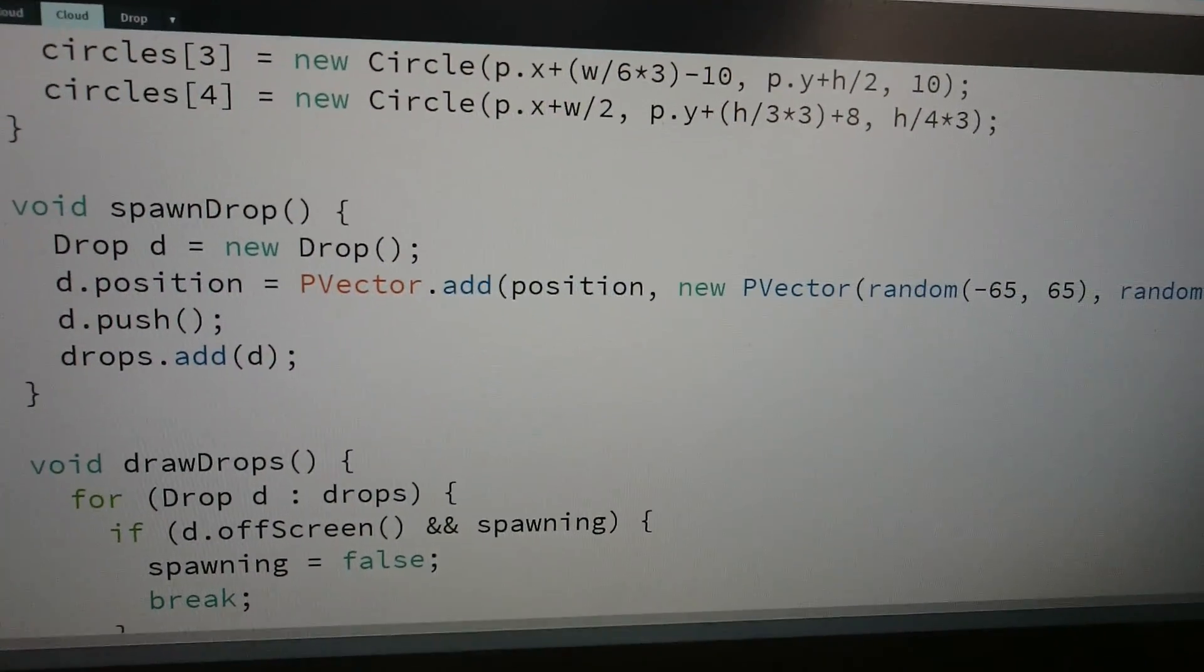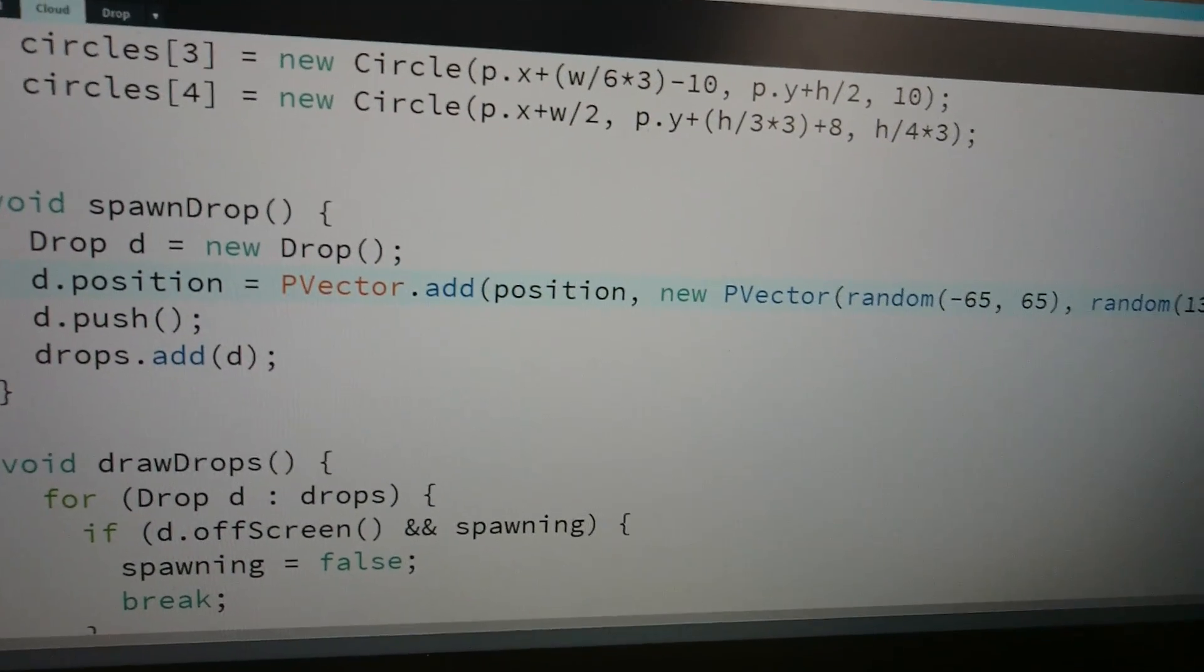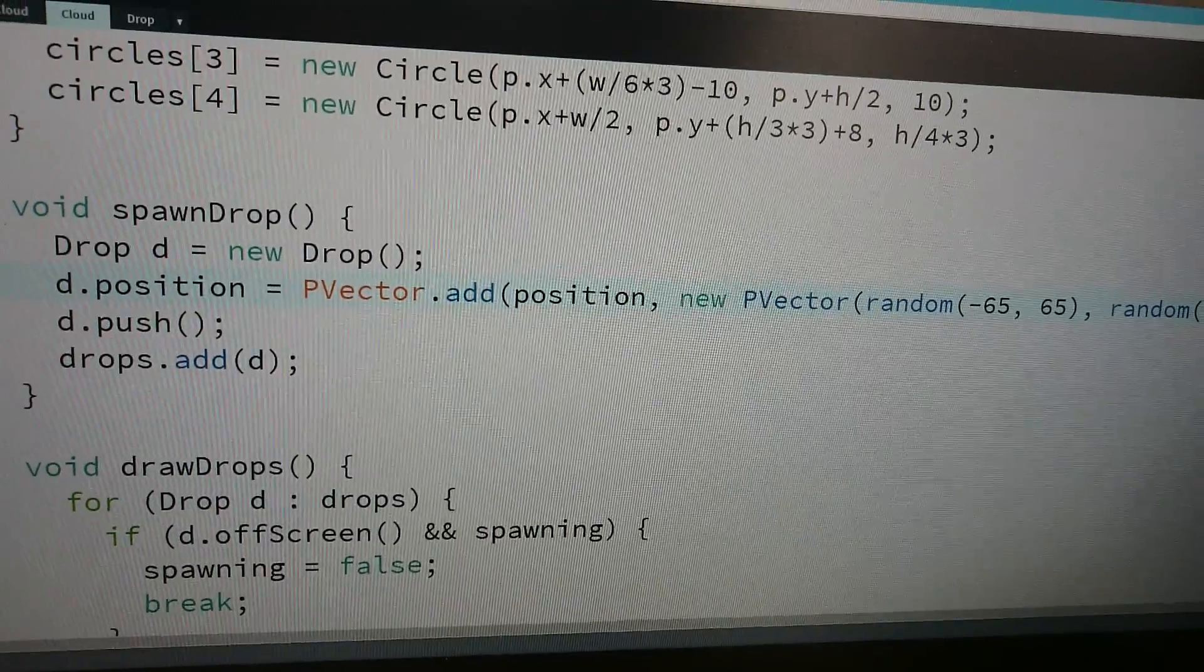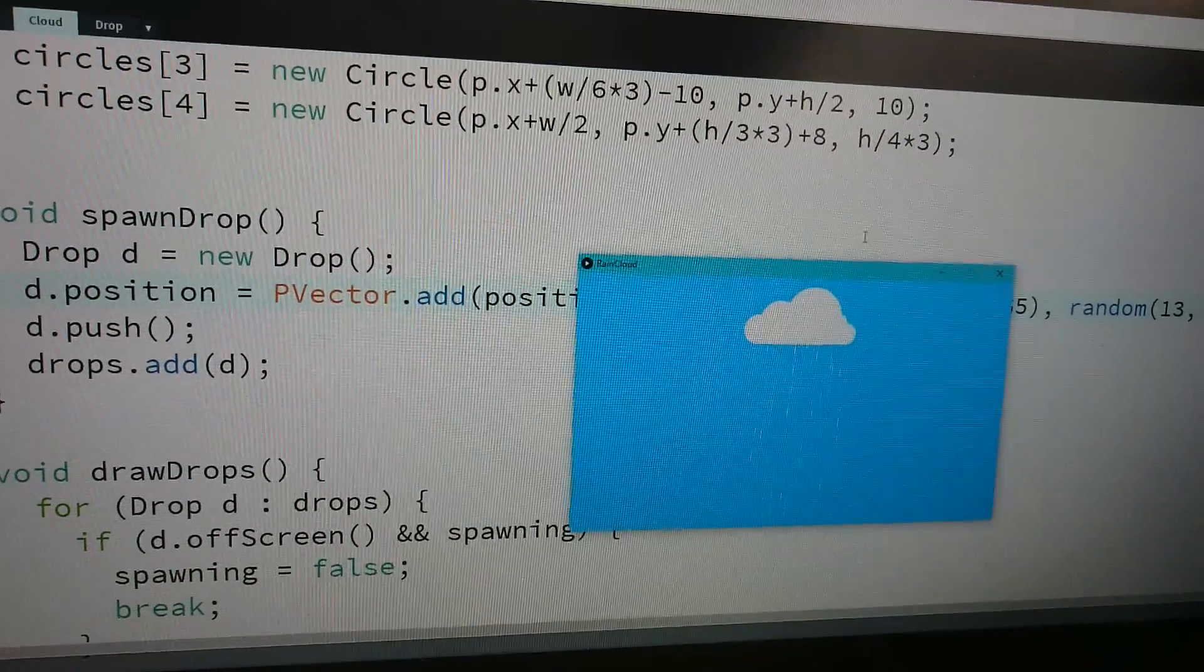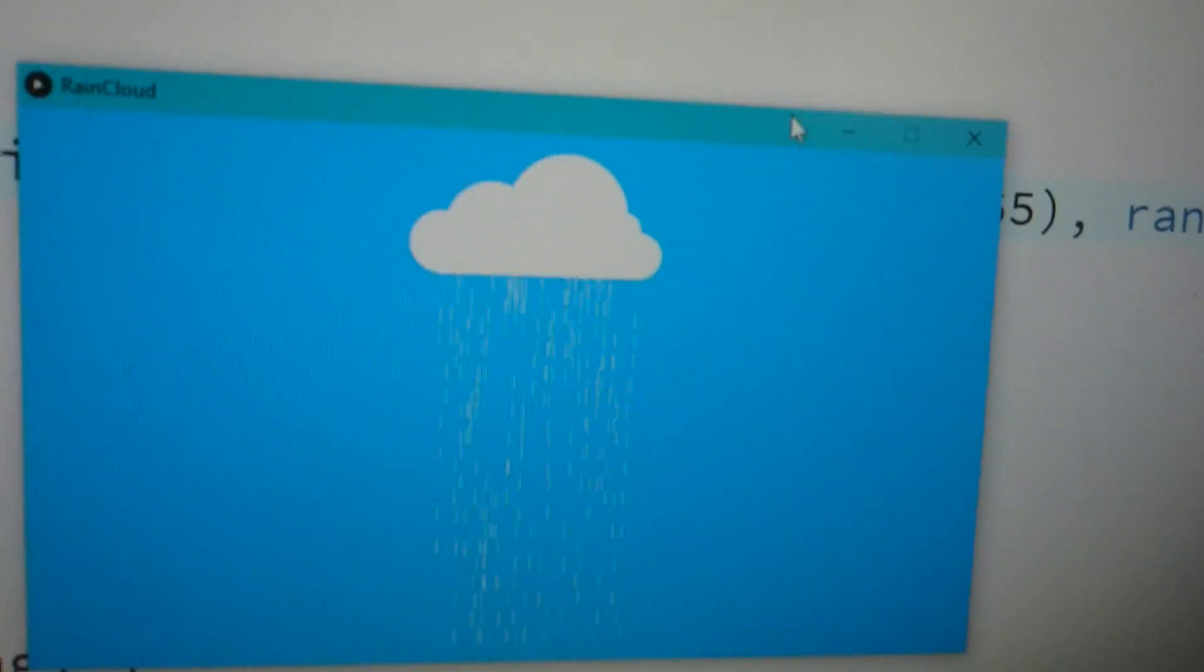How many circles did you use to make the cloud? Five. Five circles and a rectangle. That's not that many circles.